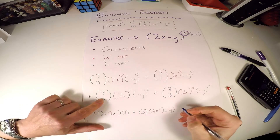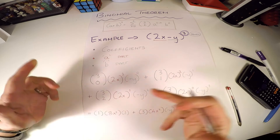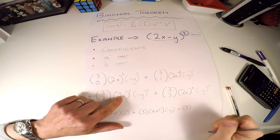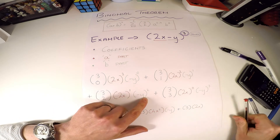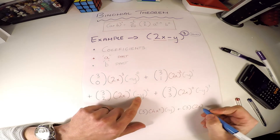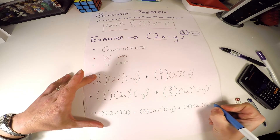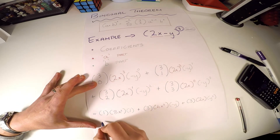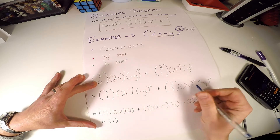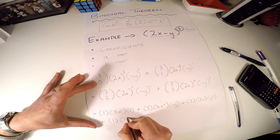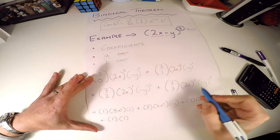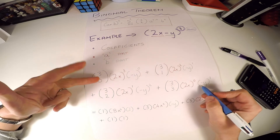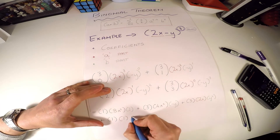For the third term: 3 choose 2 is also 3 — it equals 3 choose 1. Then (2x)¹ is just 2x, and (−y)² means minus y squared. A minus times a minus gives a plus, so that becomes +y². For the last term: 3 choose 3 equals 1 — the same as 3 choose 0. Then (2x)⁰ is one, and (−y)³ is minus y cubed, because a minus times a minus is a plus, then another minus brings us back to minus.